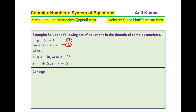Let Omega be the complex number a plus bi, so its conjugate is a minus bi. Let Z be the complex number c plus di, so its conjugate is c minus di. You can pause the video, attempt the question, and then look into my suggestions.